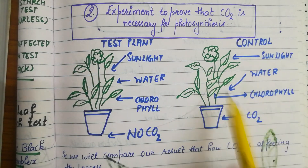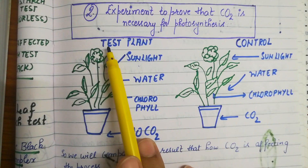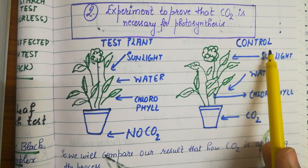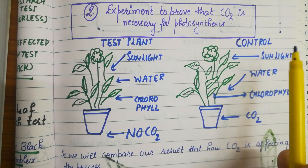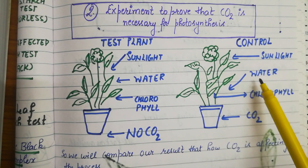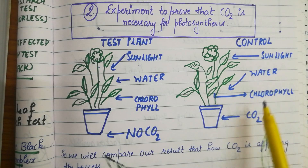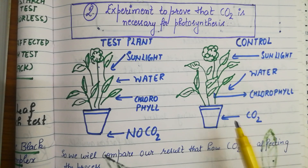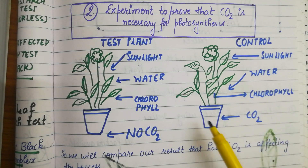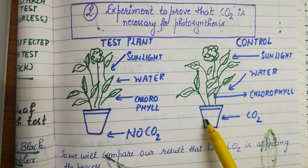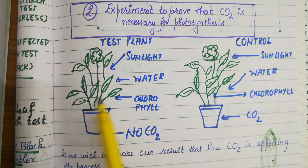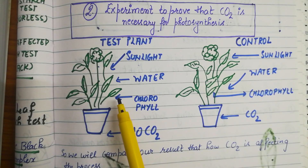We have taken two plants. One plant I have named as the test plant and one is the control plant. The control plant is usually that plant which is given everything — sunlight, water, chlorophyll, CO2 — meaning all conditions required by the plant are given to this control plant.